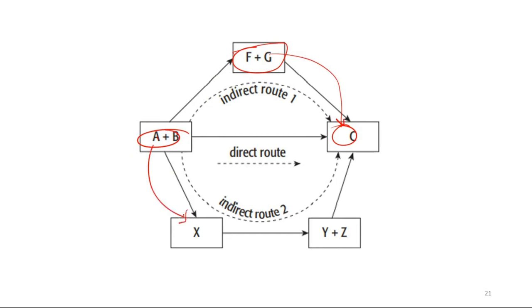This is the reaction A plus B to C. Then A plus B, then Y plus Z, then X. No difference. This is the indirect route, and this is the direct route.